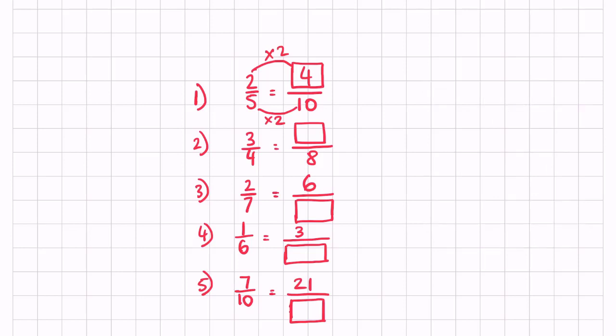Okay, I hope you had a good go at these questions. So first of all we need to find out 4 times what number gives us 8, which is 2. So that means 3 times 2 which is 6. Over here we have the numerator but the denominator is missing. So 2 times 3 is 6, so that means 7 times 3 is going to be 21. 1 times 3 is 3, that means 6 times 3 is going to be 18. So 3 over 18 is an equivalent fraction to 1 sixth. 7 times 3 is 21, so 10 times 3 is 30. And these are the answers for these questions.